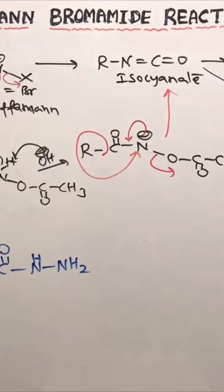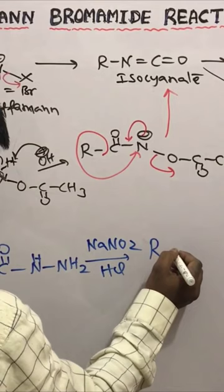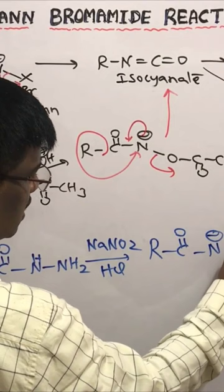This hydrazyne amide upon nitrosation with NaNO2 in presence of HCl is going to form a diazonium salt. This is plus Nitrogen.